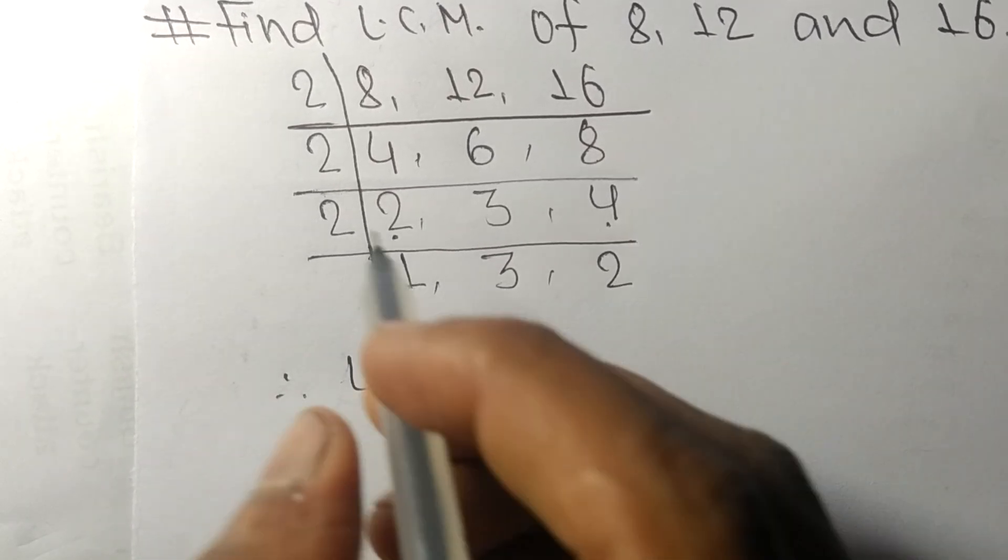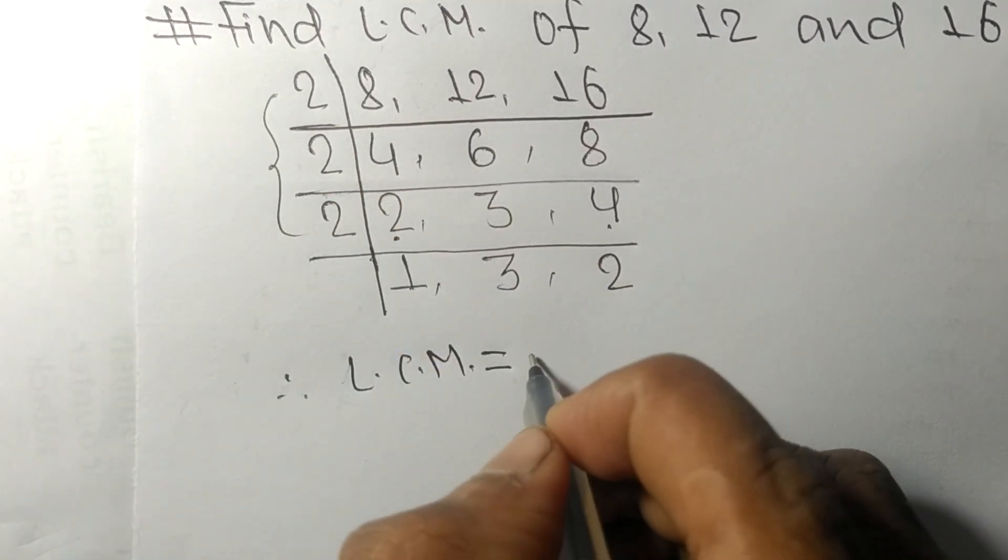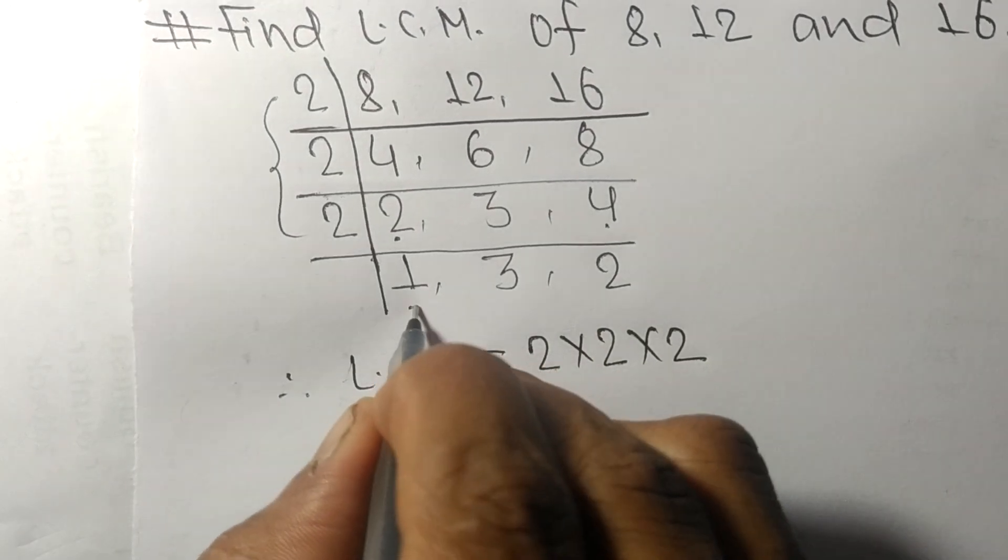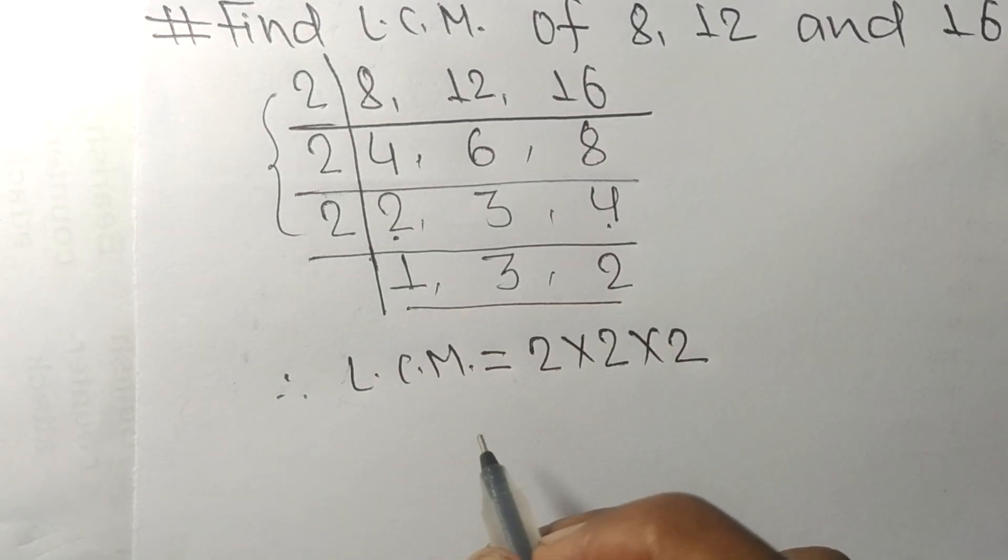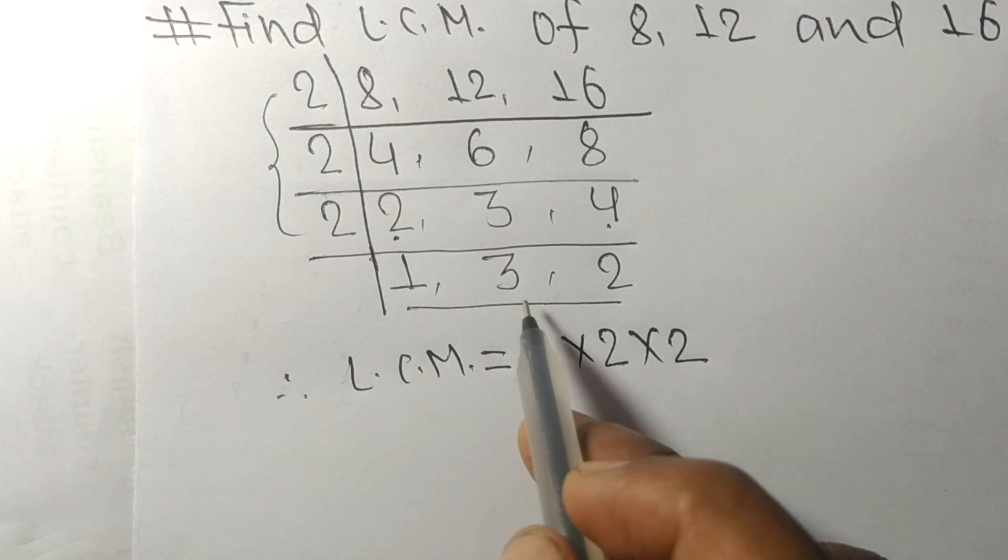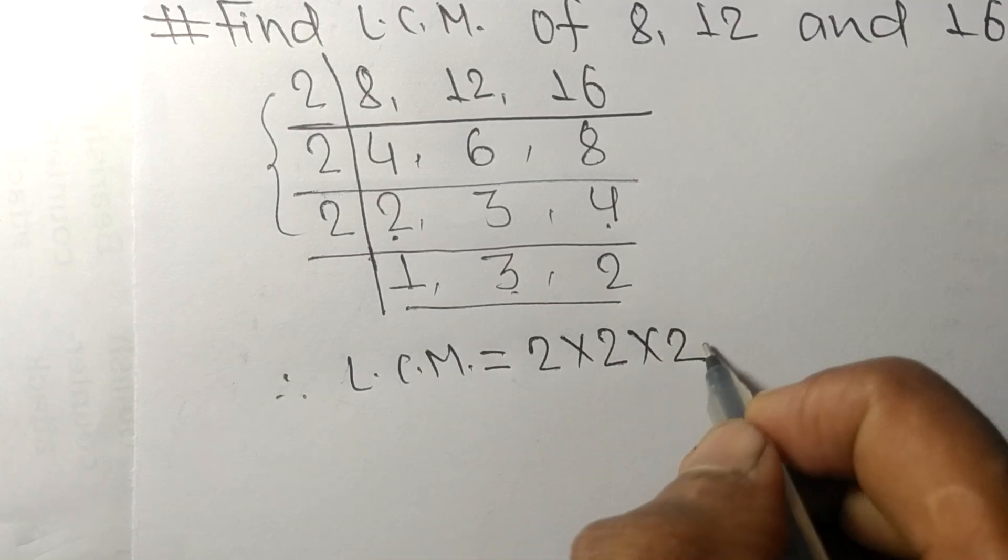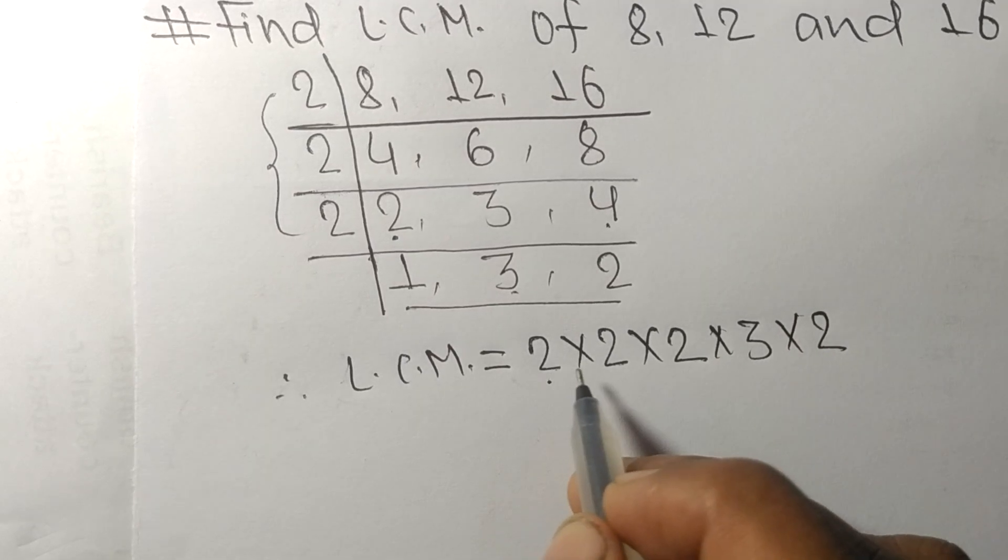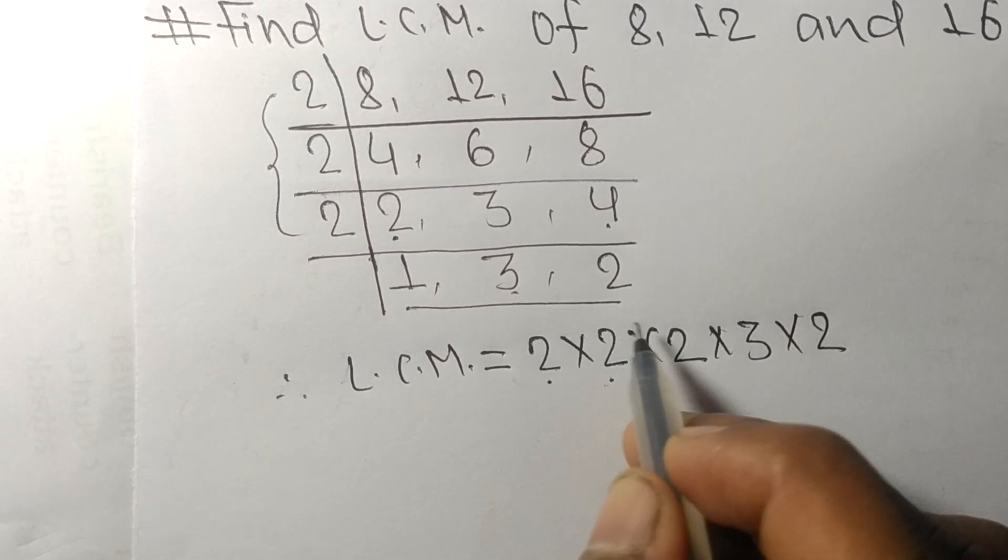From this side, it is 2 times 2 times 2. From this side, we choose the numbers greater than 1, that is 3 and 2. So 3 and 2: 2 times 2 means 4, 4 times 2 equals 8.